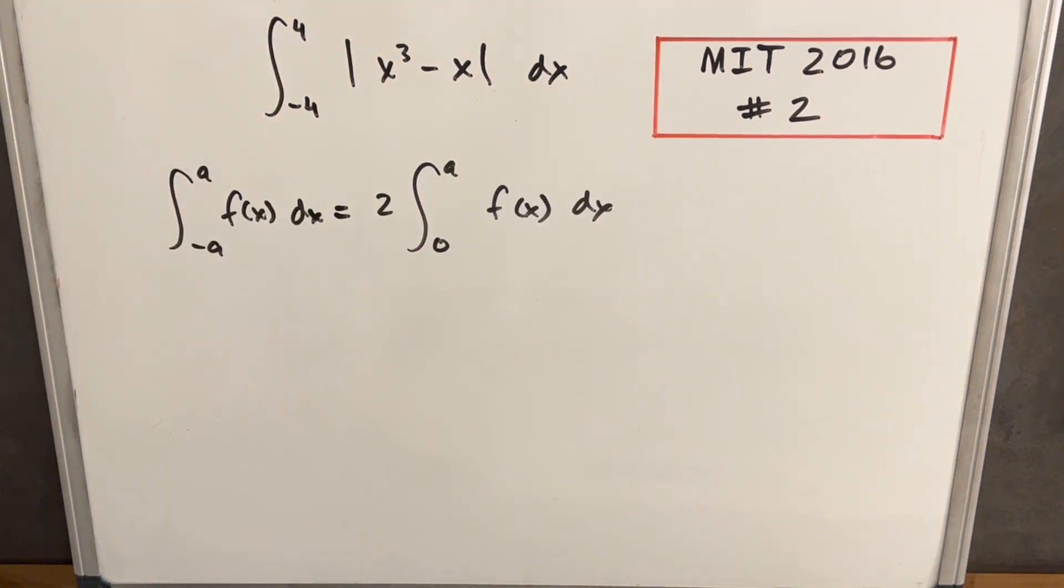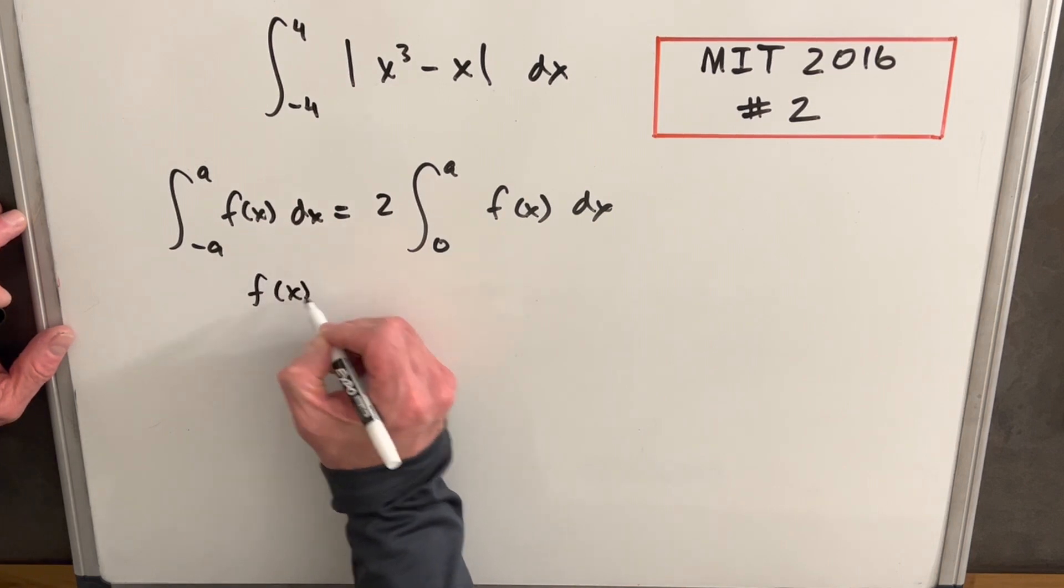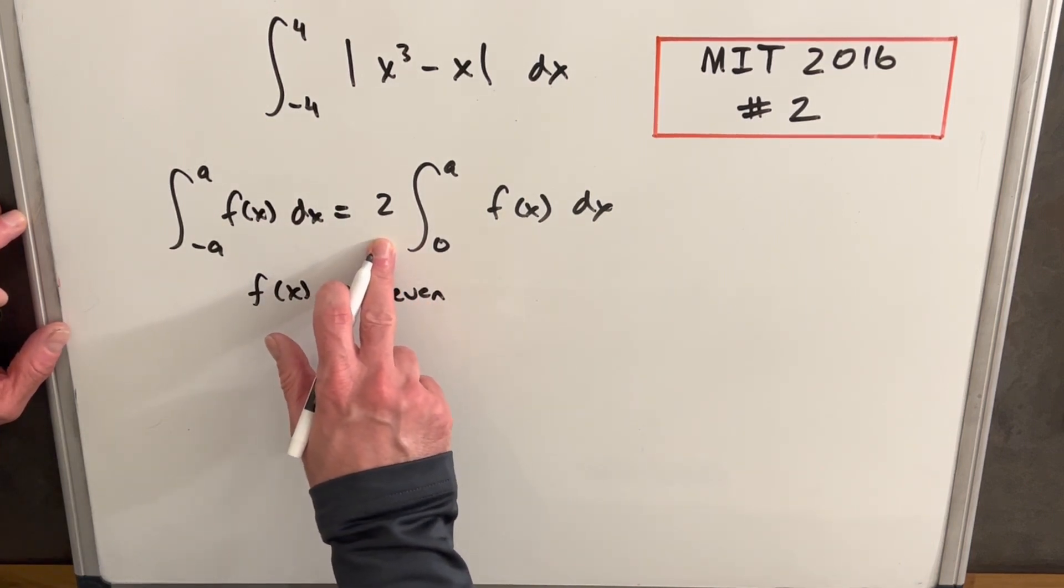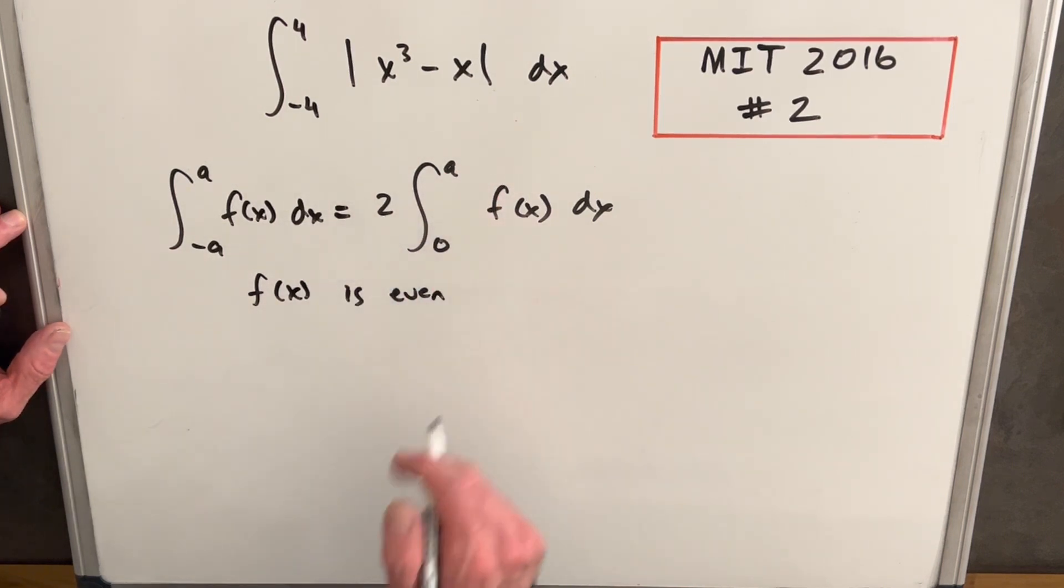And next, you might be wondering, why did we do that? Why do we even care that it's even function? Well, we have this property here, that when f of x is even, we can do this thing where we just double the integral, but we change our bound from a to zero.